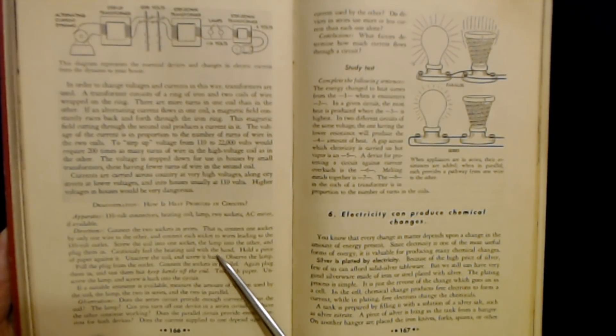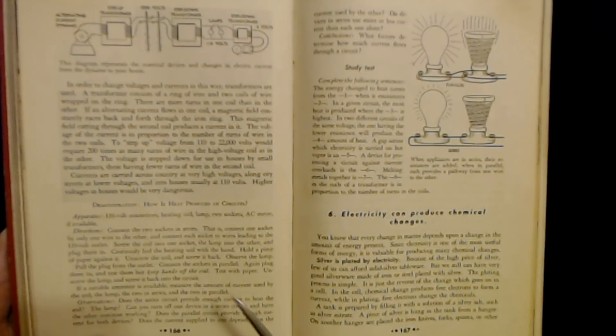Cautiously fill the heating coil with the hand. Hold a piece of paper against it. Unscrew the coil and screw it back. Observe the lamp. Pull the plug from the outlet. Connect the sockets in parallel. Again, plug them in and test them, but keep hands off the coil. Test with paper. Unscrew the lamp and screw it back into the circuit.